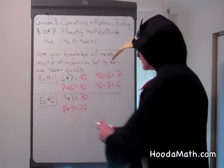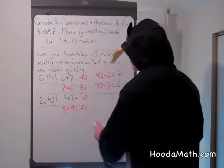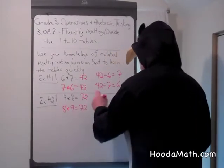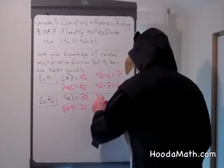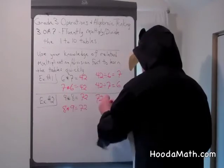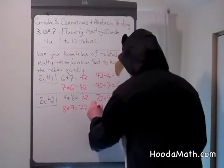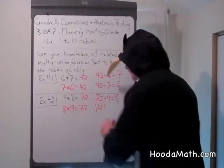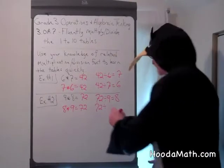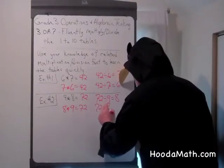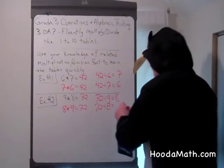What would be the related division facts? That's right. 72 divided by 9 equals 8, and 72 divided by 8 equals 9.